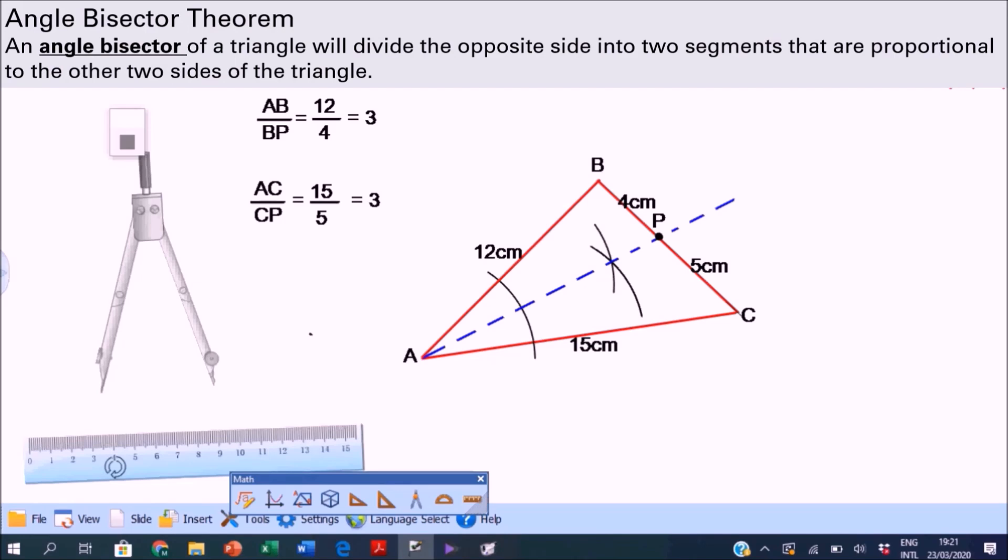Actually yes, this is known as the angle bisector theorem, which states that any angle bisector of a triangle will divide the opposite side into two segments that are proportional to the other two sides of the triangle.